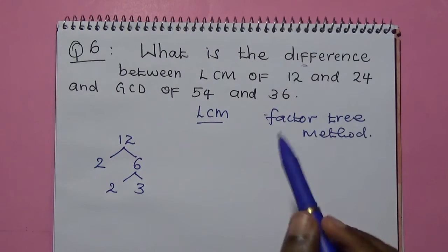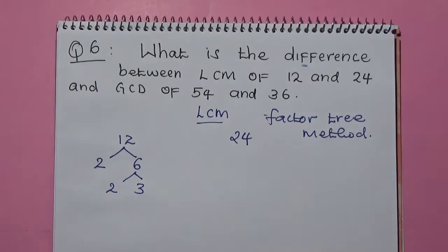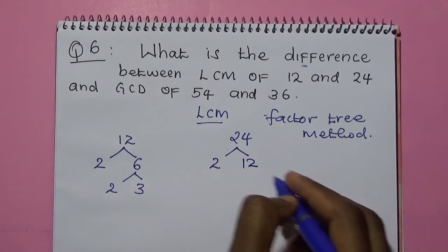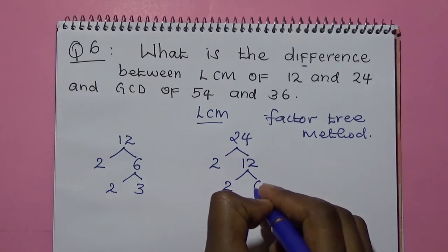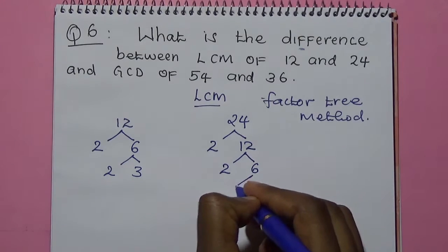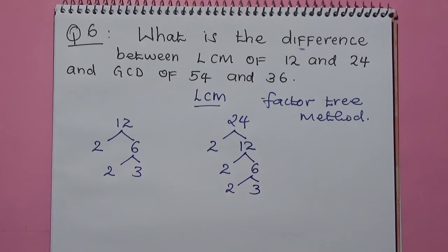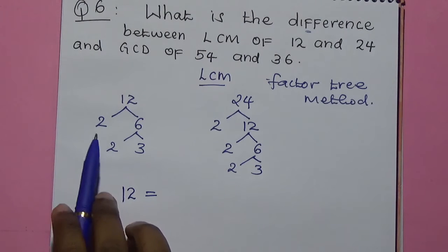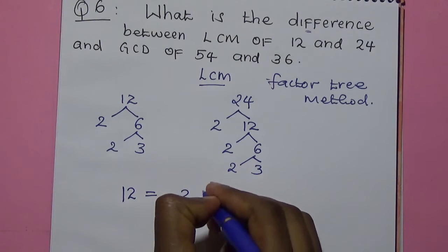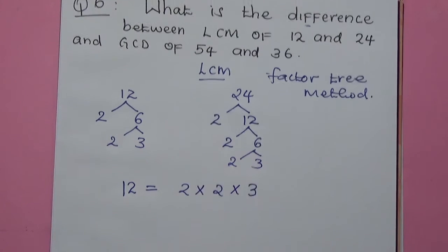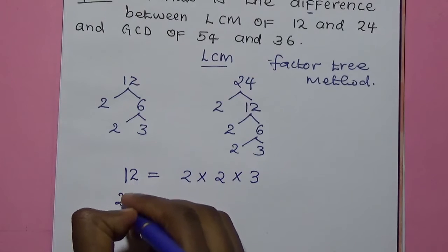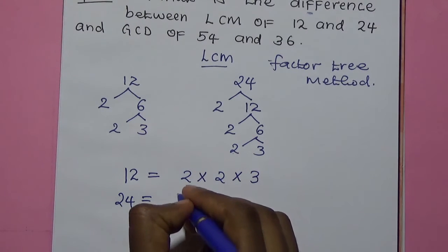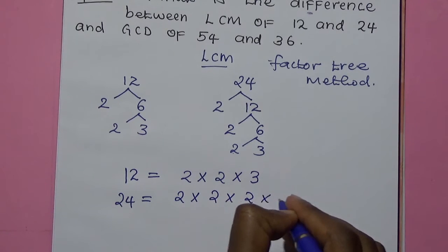Then we go to 24 and use the same method. We find the prime factors of 24. It will be 2 because of 12, then 2 because of 6, then 2 and we are left with 3. Therefore, the prime factors of 24 will be 2 times 2 times 2 times 3.